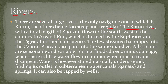Both the Euphrates and Tigris rivers originate from Turkey and flow through Syria and Iraq, forming the Arvand Rud in Iraq.